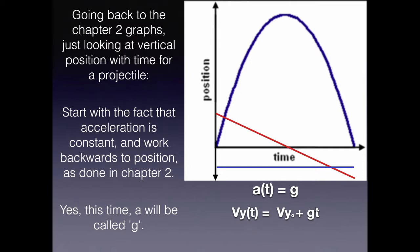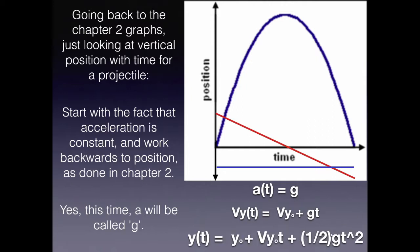Going back one more level gives us the vertical position with time. We multiply the constant from the velocity equation by t — so vy₀·t — and the g·t term becomes ½g·t², with a one-half in front. Adding the initial position gives: y(t) = y₀ + vy₀·t + ½g·t². This looks very similar to equation number two of the big three. We've now derived two of the three vertical equations.